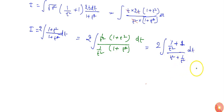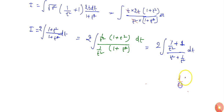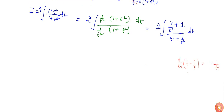Now, 1 plus 1 by t² dt is the derivative of t minus 1 by t, since d/dt of (t minus 1 by t) equals 1 plus 1 by t². So we have to change the denominator in terms of t minus 1 by t.